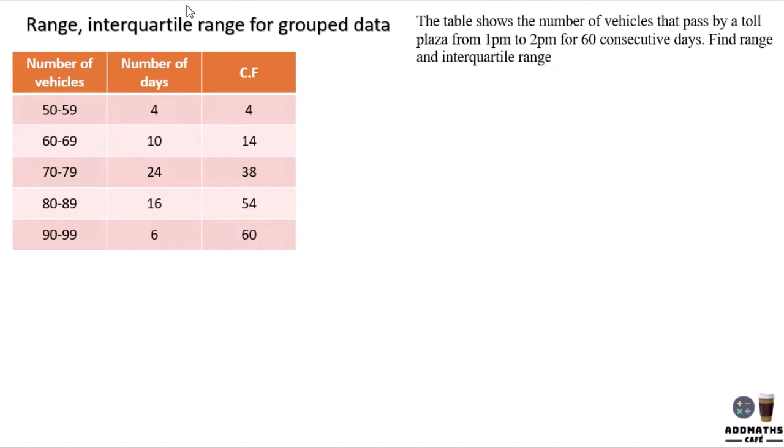To find range, we use the highest class data. You have to use the midpoint, so 99 plus 90 divided by 2, minus the smallest range data. Use the midpoint as well, add them together and divide by 2. This will give you 94.5 minus 54.5, which equals 40. So the range is 40.